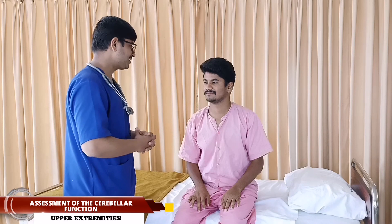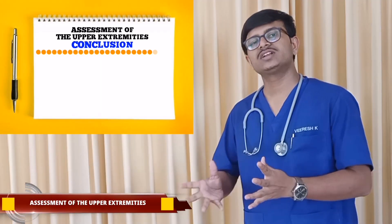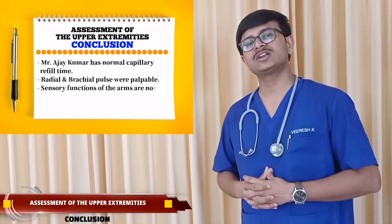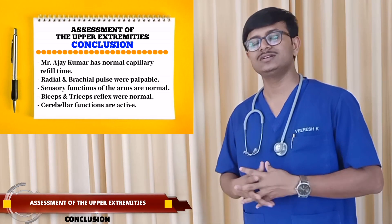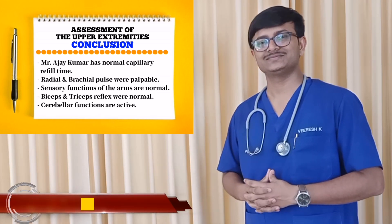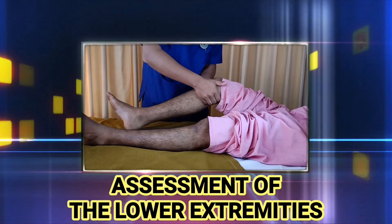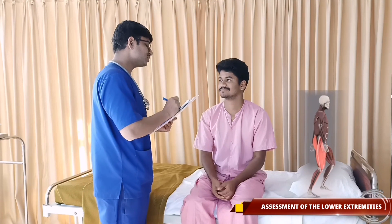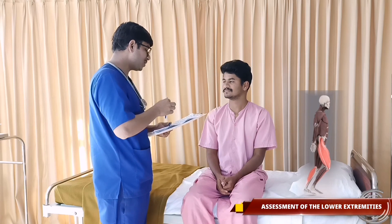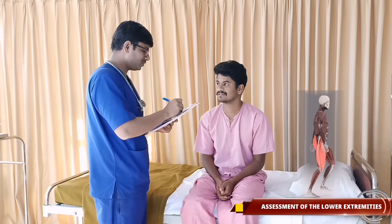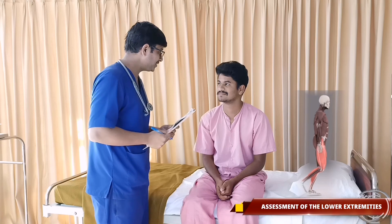This completes the upper extremities examination. Thank you so much for your cooperation. Mr. Ajayi has normal capillary refill. Radial and brachial pulses were palpable. Sensory function of the arms is normal. Biceps and triceps reflexes were normal, and his cerebellar functions are intact. Now moving on to lower extremities. Mr. Ajayi, I am going to assess your legs and you will have to perform some movements. Is that okay? Sure, sir. Do you have any pain in your lower extremities? No, sir. Let's start the lower extremities examination.